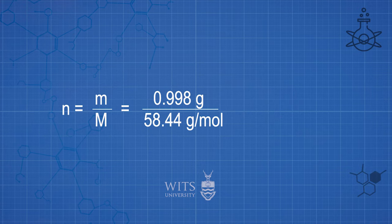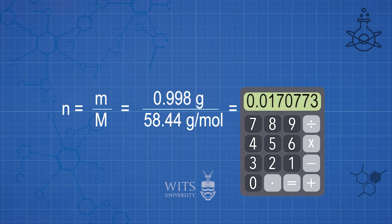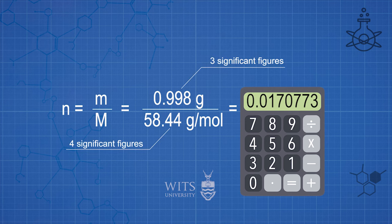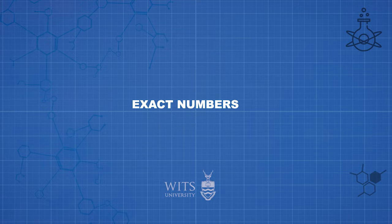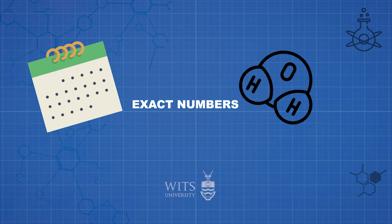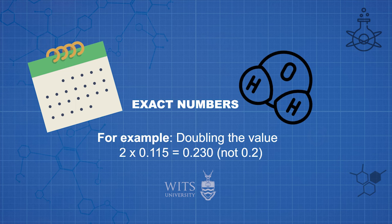For example, if we are told that the molar mass for a sample is 58.44 grams per mole, we could calculate the number of moles. When you enter the values onto your calculator, you get an answer of 0.0170773. But since the least number of significant figures in the calculation is 3, we report the answer to 3 significant figures and round off the answer to 0.0171 moles. Exact numbers — such as the number of days in a week or the number of oxygen atoms in a water molecule — do not have any uncertainty associated with them and should not be included when considering significant figures.